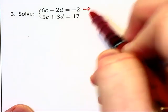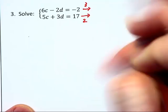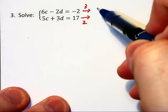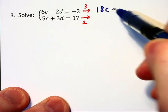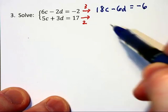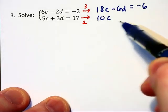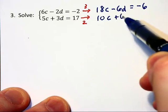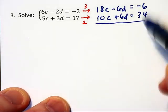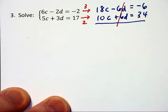And I'm going to do that by multiplying the first equation by 3 and the second equation by 2. And that will give us 18c minus 6d is equal to negative 6. And the second equation will become 10c plus 6d is equal to 34. And we designed this specifically so that those 6d's would cancel each other out.